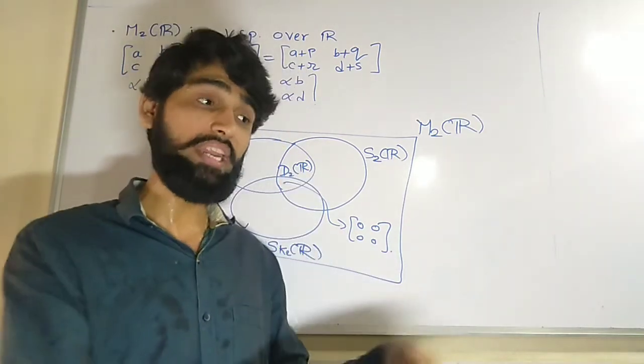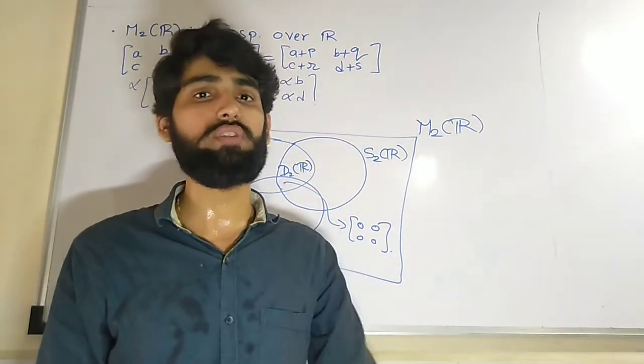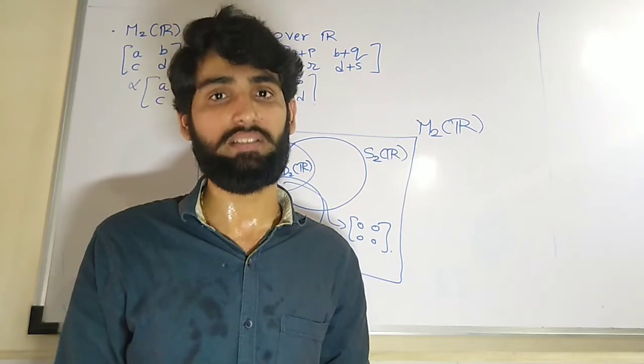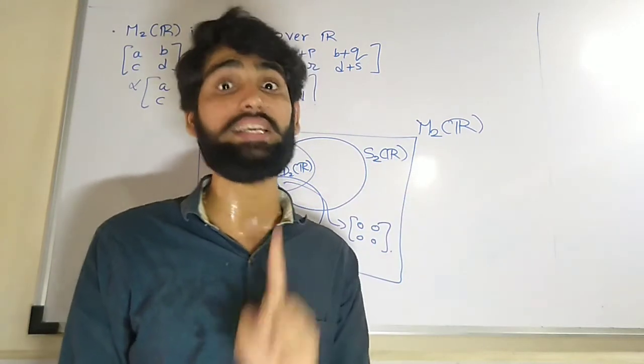So if I give you any vector space and I talk about any subspace of it, then every subspace of them has a non-empty intersection, because we know that all of them contain one common point, that is the zero element.